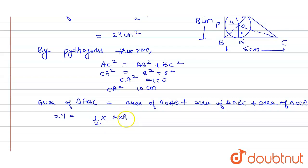Now we need to find the value of r, so we will simplify this. We will take 1/2 × r outside, and AB + BC + CA will remain inside.